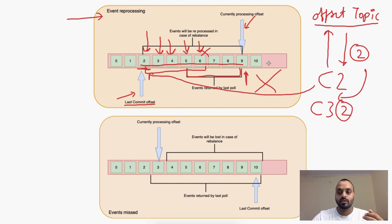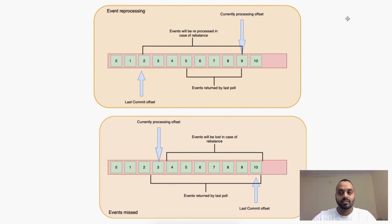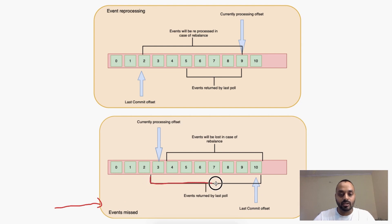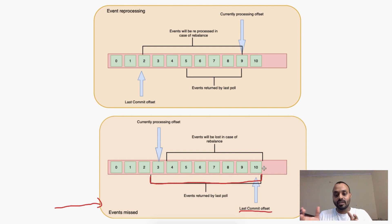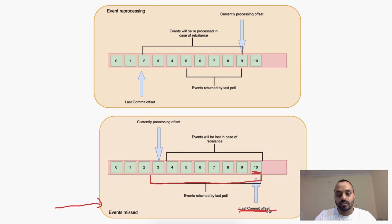Now let's see the scenario where we can have a missed event. In this case, the consumer polled data and immediately updated the last committed offset with the largest offset it got in the data — that is 10. So it committed 10 as the last committed offset.